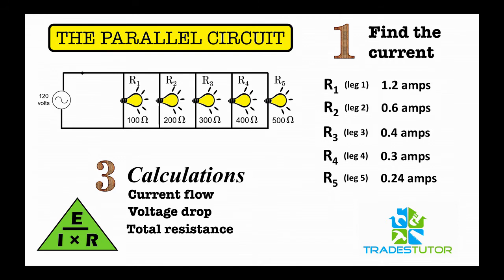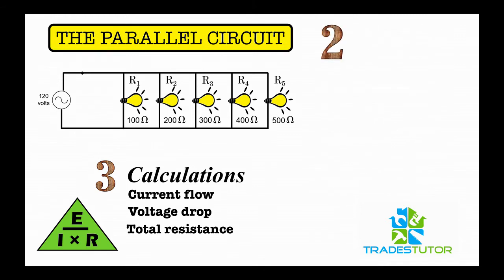All right, now number two, we're going to find the voltage drop. We'll just find it across each leg of the resistor—there's only one resistor in each leg. Now, once again, I want to point out, if you look to the left of the drawing, you'll find that this is 120 volts alternating current. So our source voltage is 120.